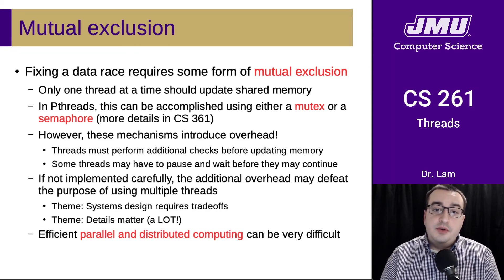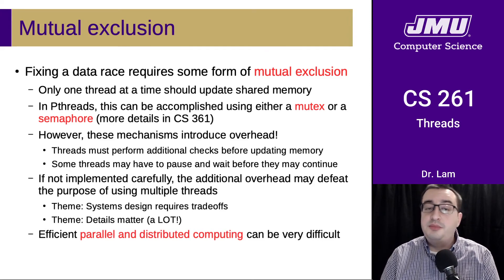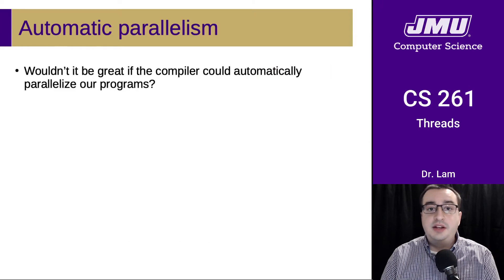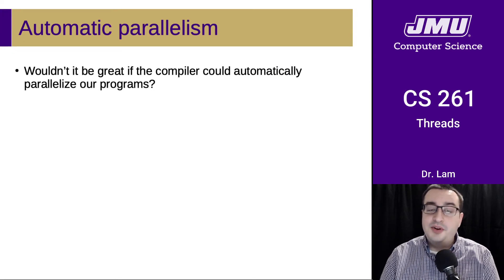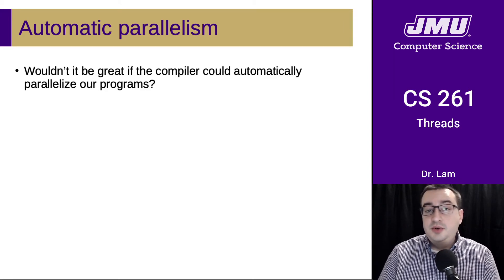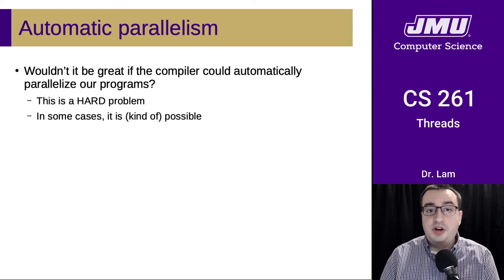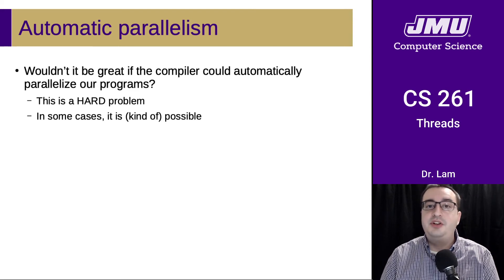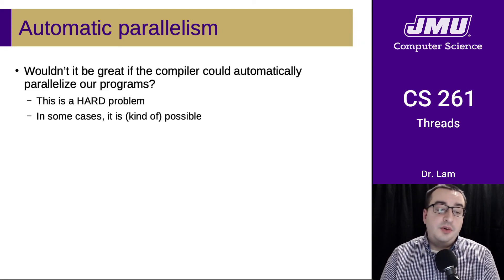Parallel and distributed computing is very rewarding in terms of the benefits it might offer, but it can also be very difficult to get right. You might wonder: the computer can compile programs and helped us convert high-level language down to low-level language — wouldn't it be great if the compiler could handle parallelization for us and figure out where all the problems are? It turns out this is a very, very difficult problem — much harder than just translating high-level code down to low-level code. There has been a lot of work on this over the years, and in some cases it's kind of possible.